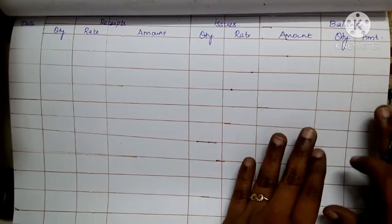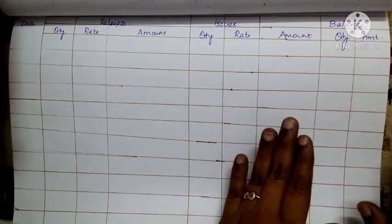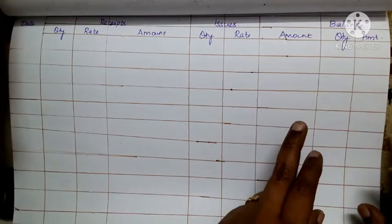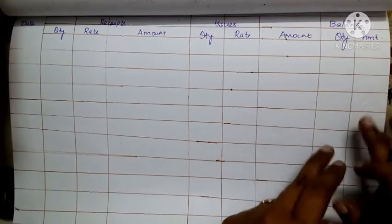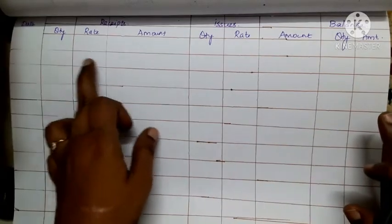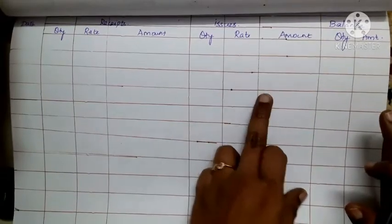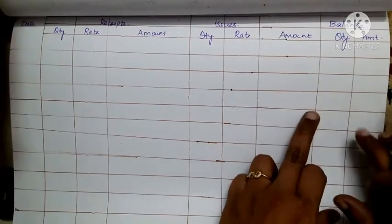Each section contains quantity and amount. The rate of value is also recorded. Under the weighted average method, you enter quantity, rate, and amount for receipts, issues, and balance.